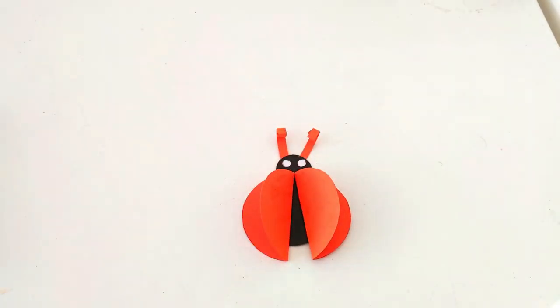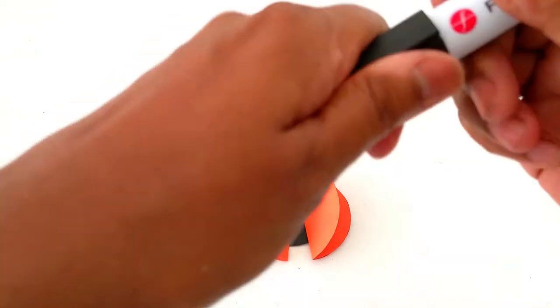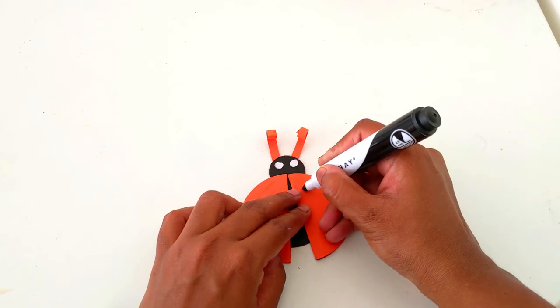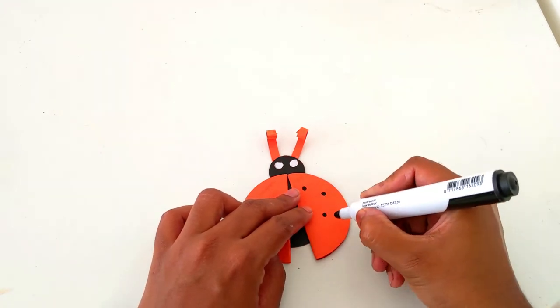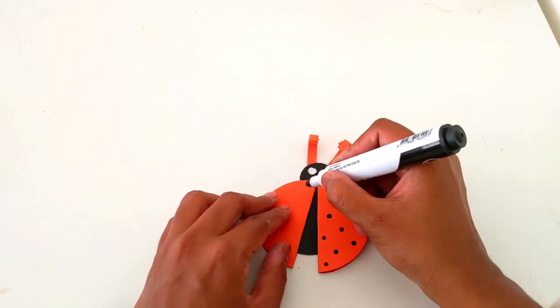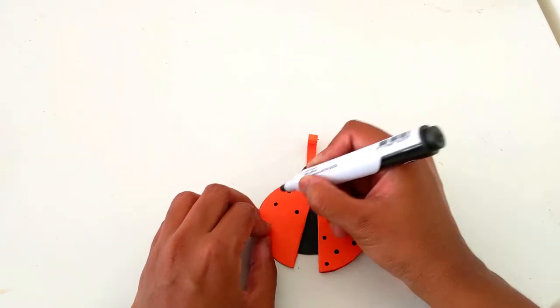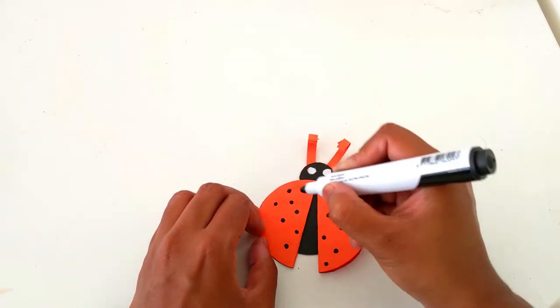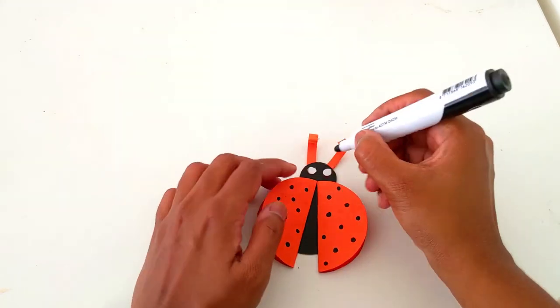So now the ladybug is ready. Now we need to put the black spots. You can also make this ladybug with red and black papers. This is a very easy craft you all can try at home.